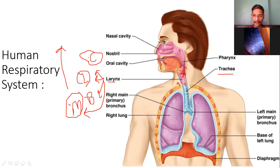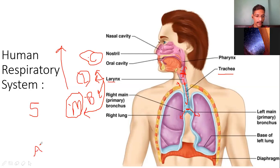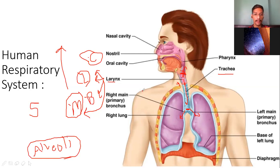After that, air is passed to the trachea. At the fifth thoracic vertebra of the spinal cord, the trachea divides and transfers air into the lungs. In the lungs, it is a relatively simple structure. Ultimately, air is transferred to the alveoli, where the main gaseous exchange happens. We will be studying the alveoli in later classes. Oxygen is transferred into the blood at the alveoli. This is the basic respiratory system.